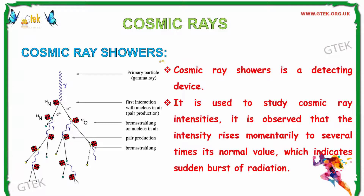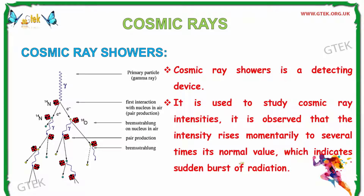Now let us see about the cosmic ray shower. Cosmic ray shower is a detecting device used to study cosmic ray intensities. It is observed that the intensity rises momentarily to several times its normal value, which indicates a sudden burst of radiation. You can see in the picture — the left side shows the cosmic ray shower getting split down, i.e., bursting into radiation.